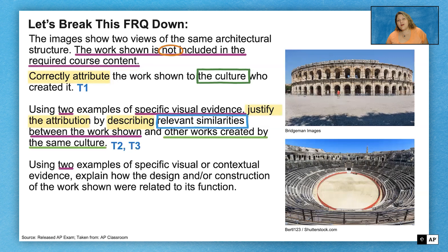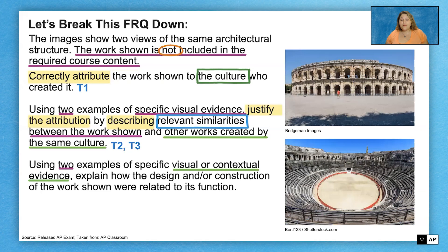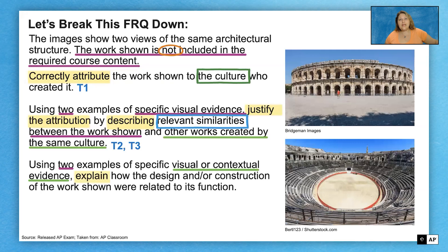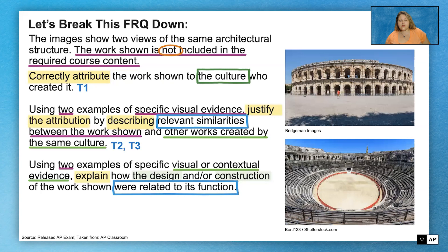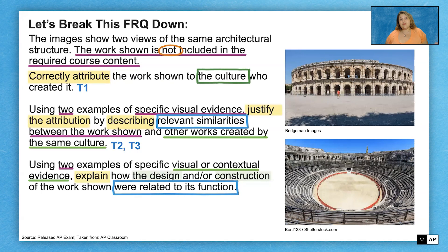Tasks four and five: using two examples of specific visual or contextual evidence, explain how the design and/or construction of the work shown are related to its function. 'Explain' is our highest-level taxonomy task verb, so you need to give real depth with that explanation. They give you a little flexibility — design or construction related to function. That covers T4 and T5.